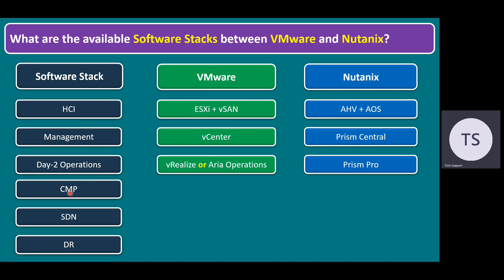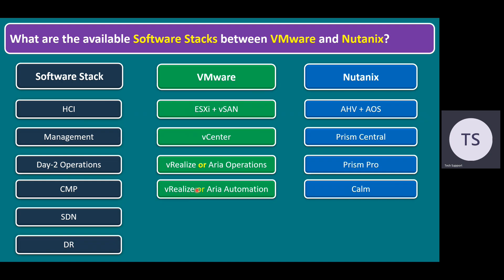CMP means Cloud Management Platform. Some customers want to enhance their environment from on-premises to private cloud, integrate with public cloud, or manage multiple clouds. For any of these cloud management platform scenarios, VMware introduced a product called vRealize Automation (VRA), and the latest name is ARIA Automation. Similarly, Nutanix also introduced a private cloud management product called COM.